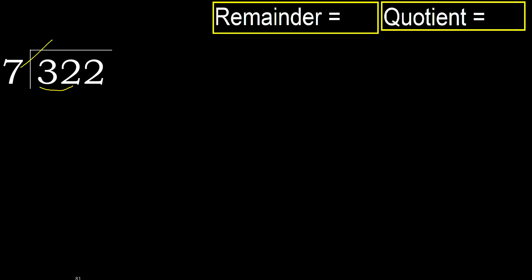7 multiplied by which number is nearest to 32 but not greater? 7 multiplied by 5 is greater. 7 multiplied by 4 is 28 — 28 is not greater. Subtract.